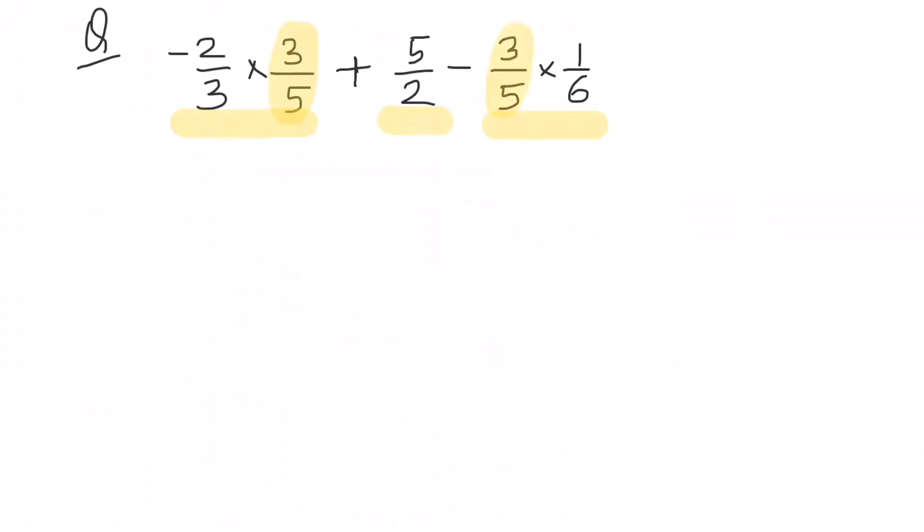You can use various properties. The first property that we will use is associative property - that we will exchange the position of these two terms. So negative two upon three into three upon five into one by six.